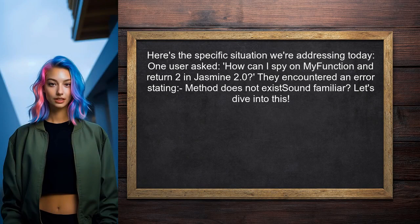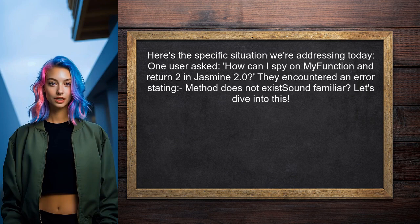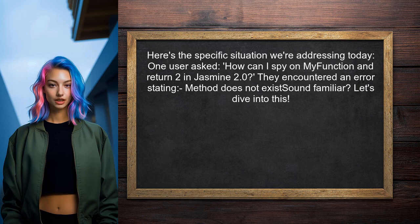Here's the specific situation we're addressing today. One user asked: how can I spy on my function and return a value in Jasmine 2.0? They encountered an error stating that the method does not exist. Let's dive into this and find a solution together.